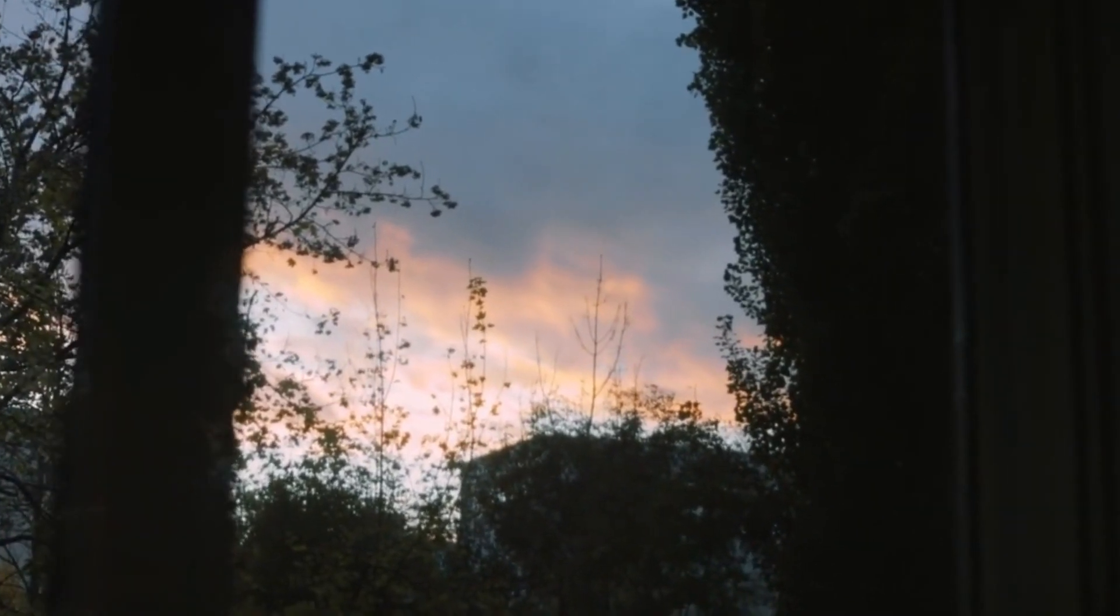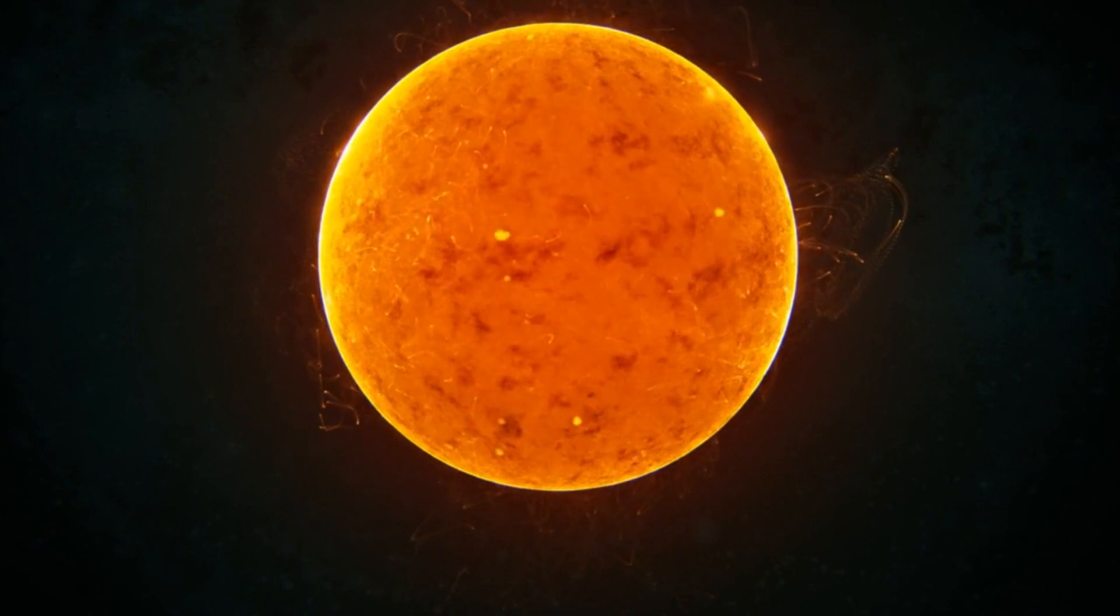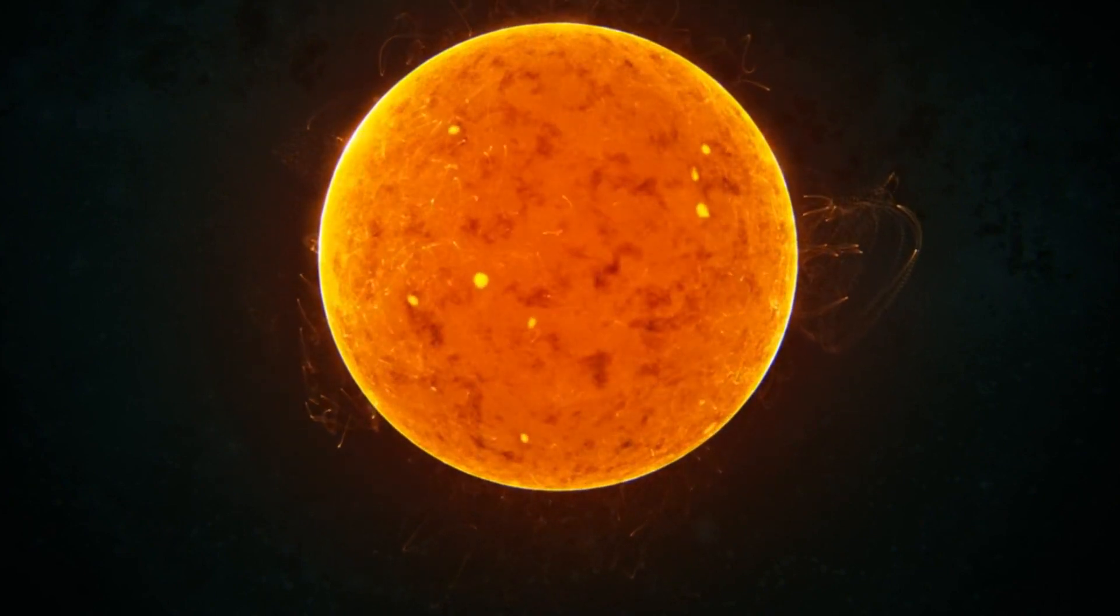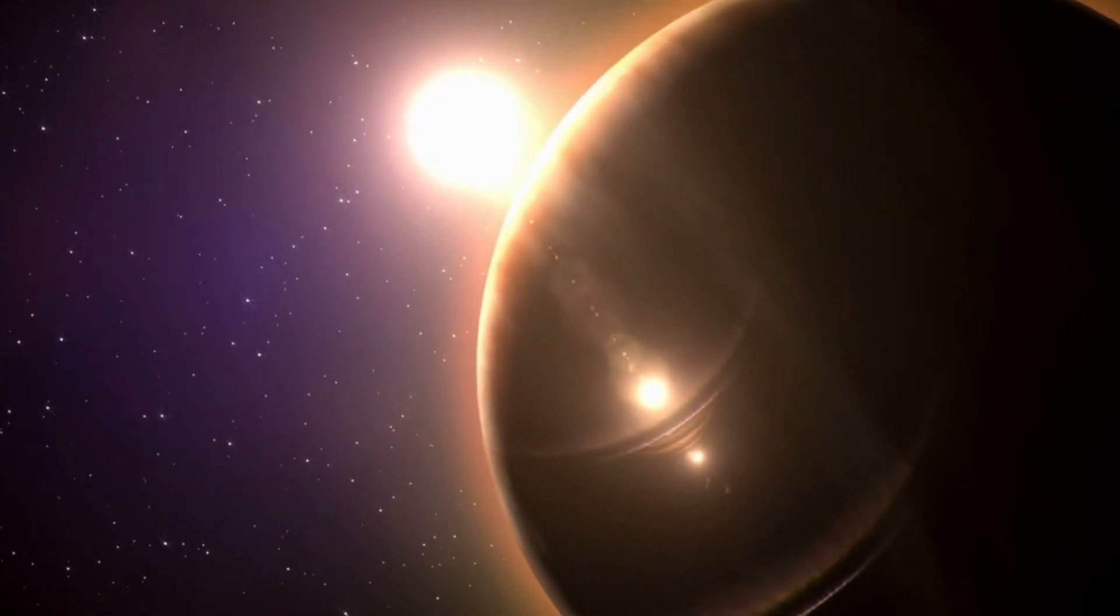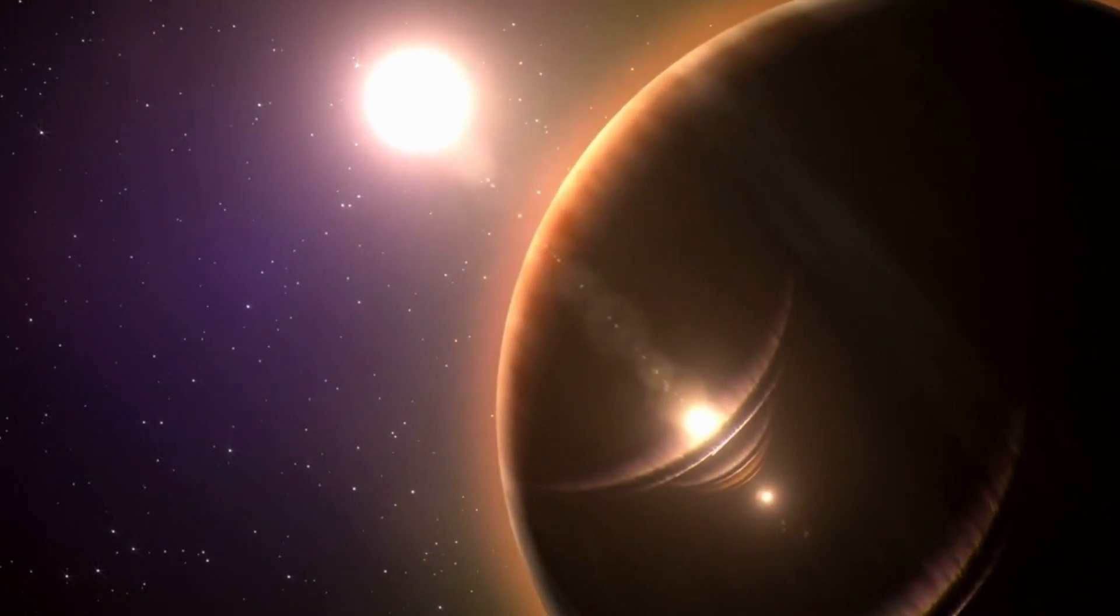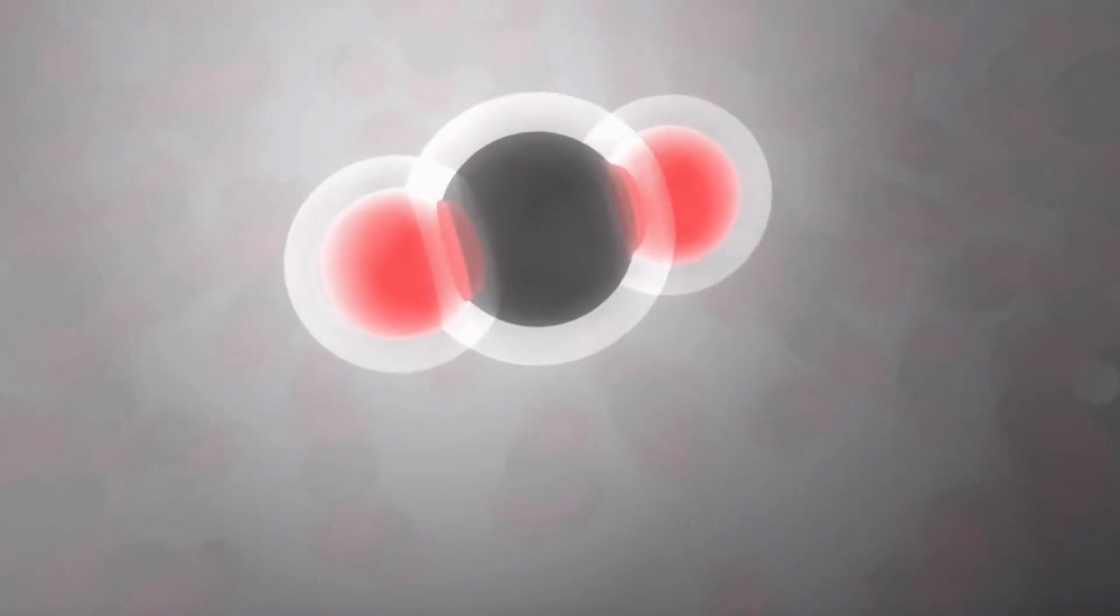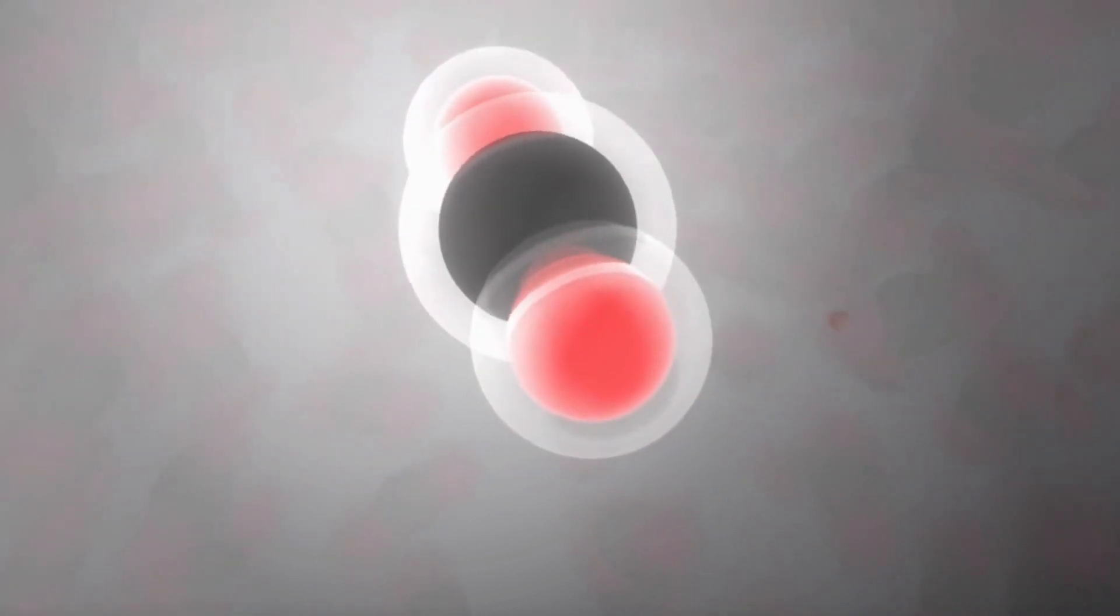The sky would turn red, as the wavelengths of light get stretched by the shrinking space. The stars would appear closer together, and eventually merge into giant fireballs. The planets would be pulled out of their orbits, and crash into each other or into their suns. The atoms would be squeezed together, and break down into their subatomic components.